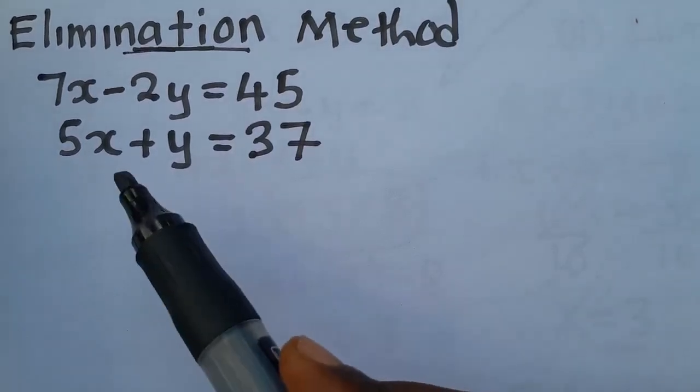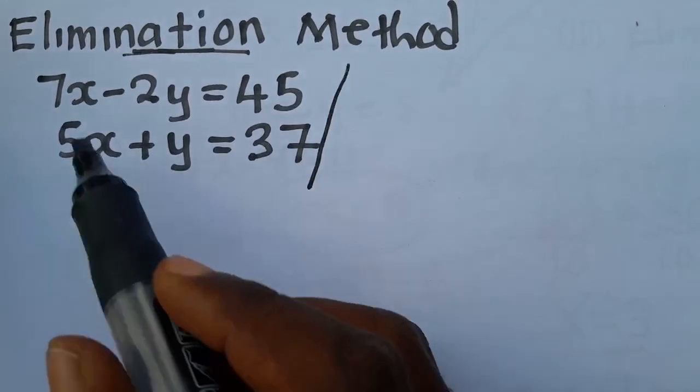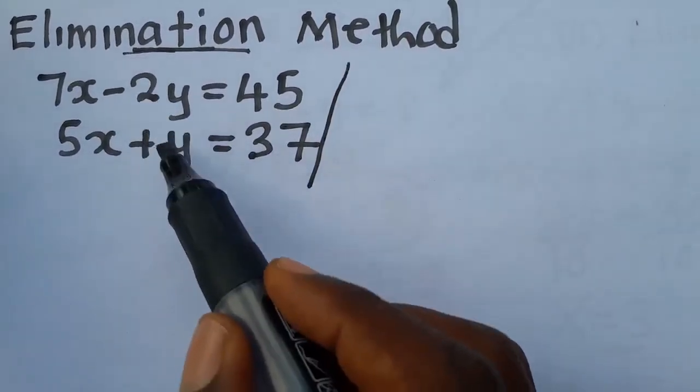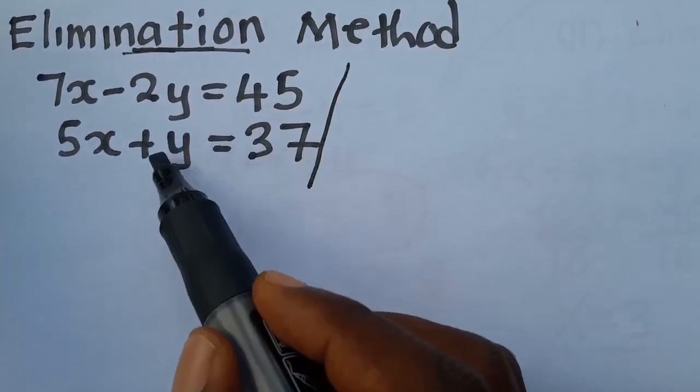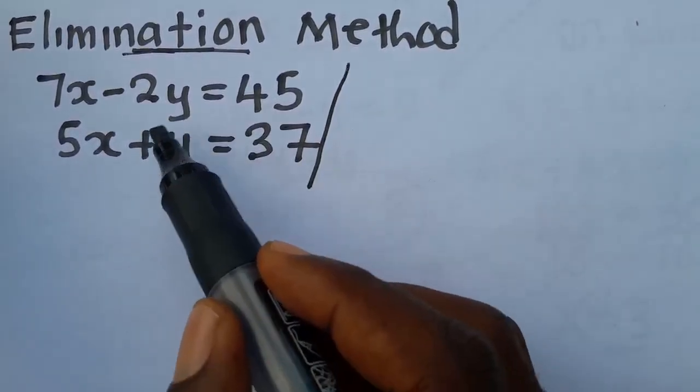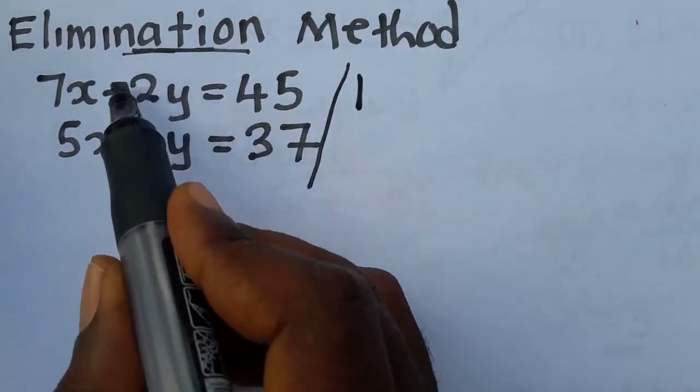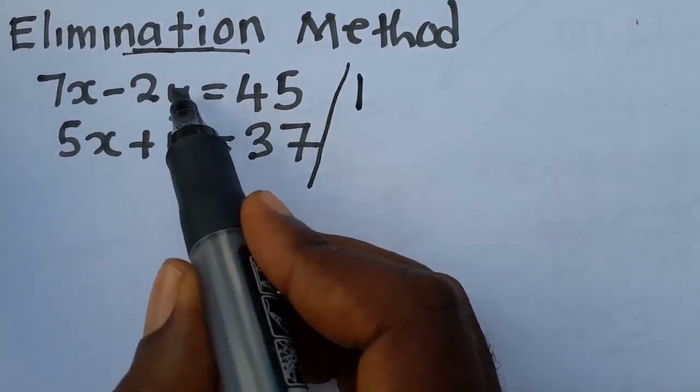If you check, you can make these ones or these. Making these ones the same, what is the coefficient here? The coefficient of y here is 1. It goes on top. Then what is the coefficient of y there? Is it 2?